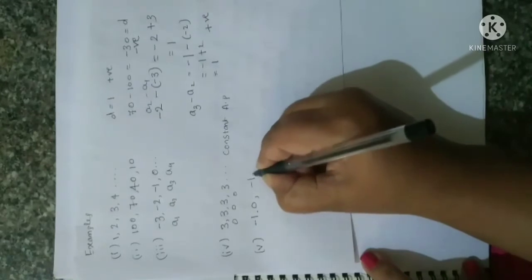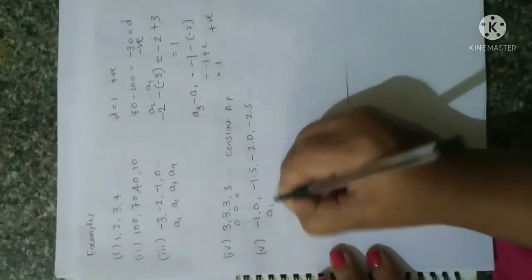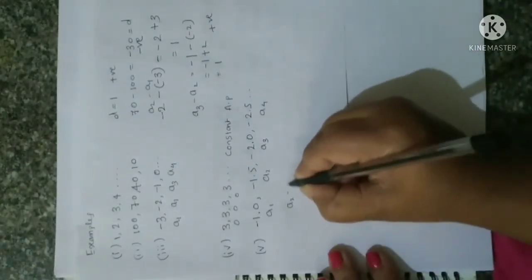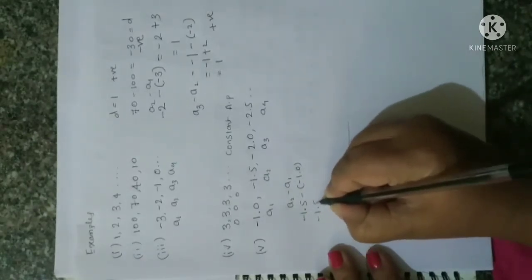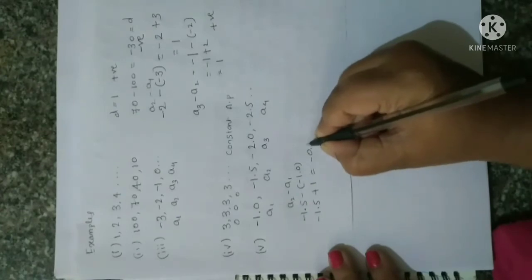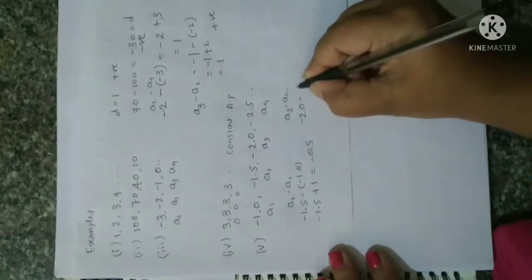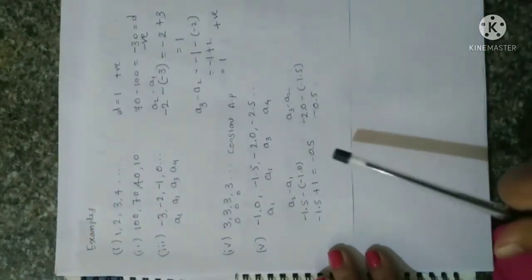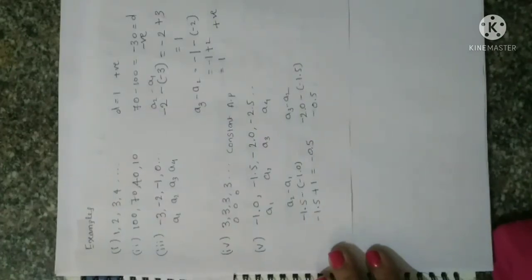Example 5: −1, −1.5, −2.0, −2.5. A1=−1, A2=−1.5, A3=−2.0, A4=−2.5. A2 − A1 = −1.5 − (−1) = −1.5 + 1 = −0.5. A3 − A2 = −2.0 − (−1.5) = −2.0 + 1.5 = −0.5. Common difference is −0.5, which is negative. Do the subtraction correctly to get the common difference. If the differences are equal, the sequence is an arithmetic progression.